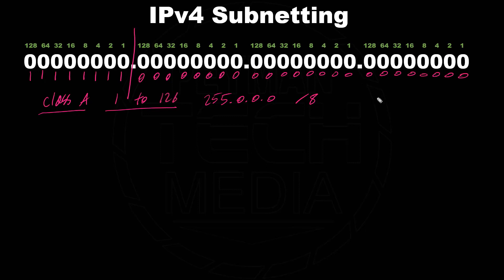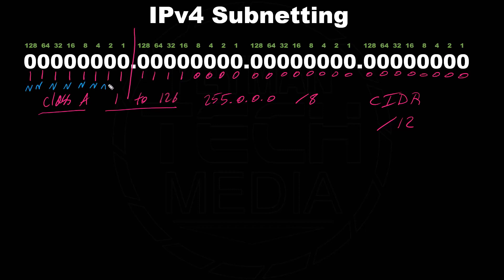Anytime we use the CIDR notation other than /8 — let's say /12 — we count left to right: 1,2,3,4,5,6,7,8,9,10,11,12. We borrowed 4 bits from the host bits. All the bits from the original default subnet mask are known as network bits. The bits borrowed from the host bits when we did subnetting are known as subnet bits, and the remaining zeros are host bits.